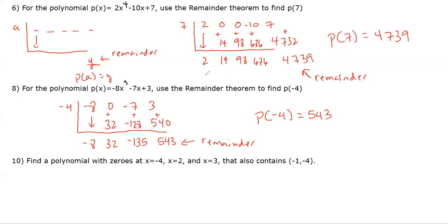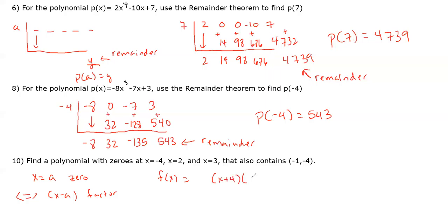Question 10: find a polynomial with zeros at x = −4, x = 2, and x = 3, which also contains the point (−1, −4). If x = a is a zero, then (x − a) is a factor. With three zeros, the polynomial factors as a·(x + 4)(x − 2)(x − 3), where a is a vertical stretch factor.